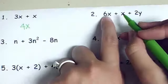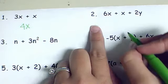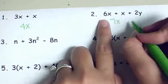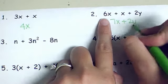On this one I could add together 6x + x or 6x + 1x and that's 7x. I can't add the 2y because x and y are not the same. So I'm just going to leave the 2y alone.